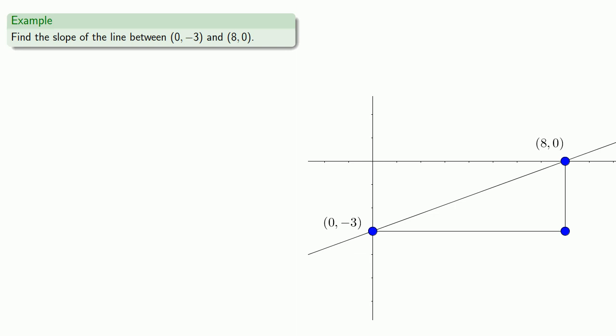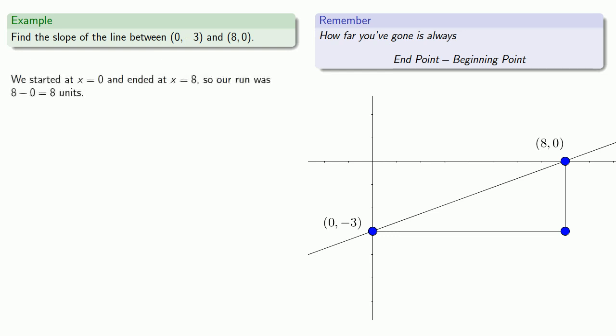How far have we gone? Since we're moving horizontally, let's take a look at our horizontal coordinates. We started at x equals 0 and ended at x equals 8. A useful thing to remember is how far you've gone is always the end point minus the beginning point. So our run was 8 minus 0, or 8 units.